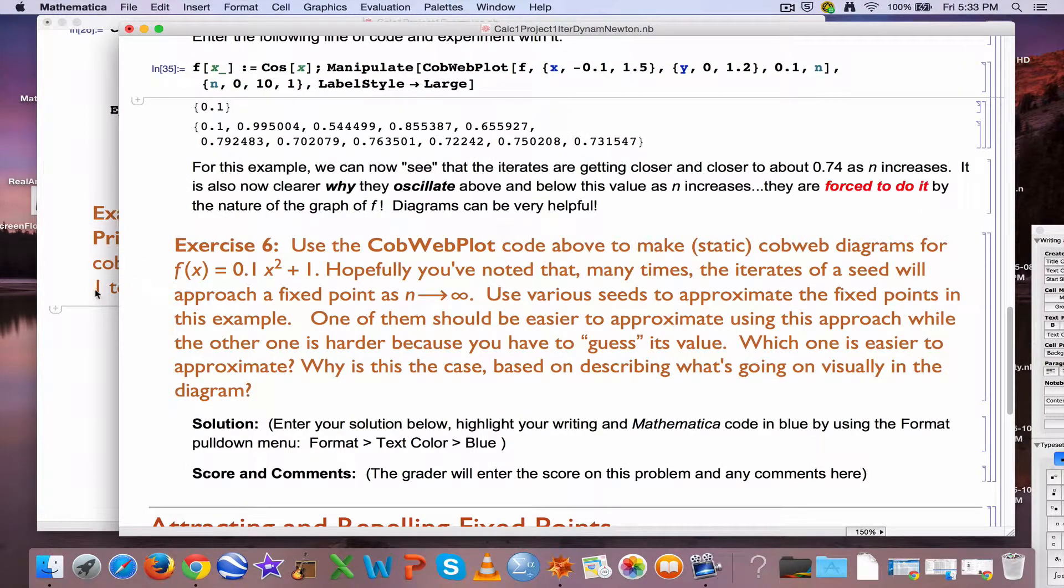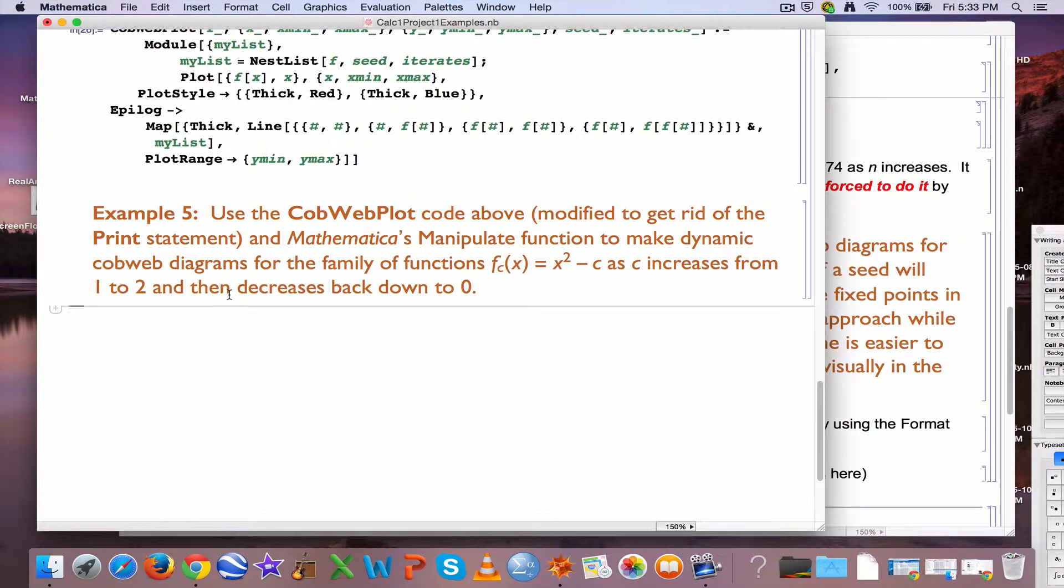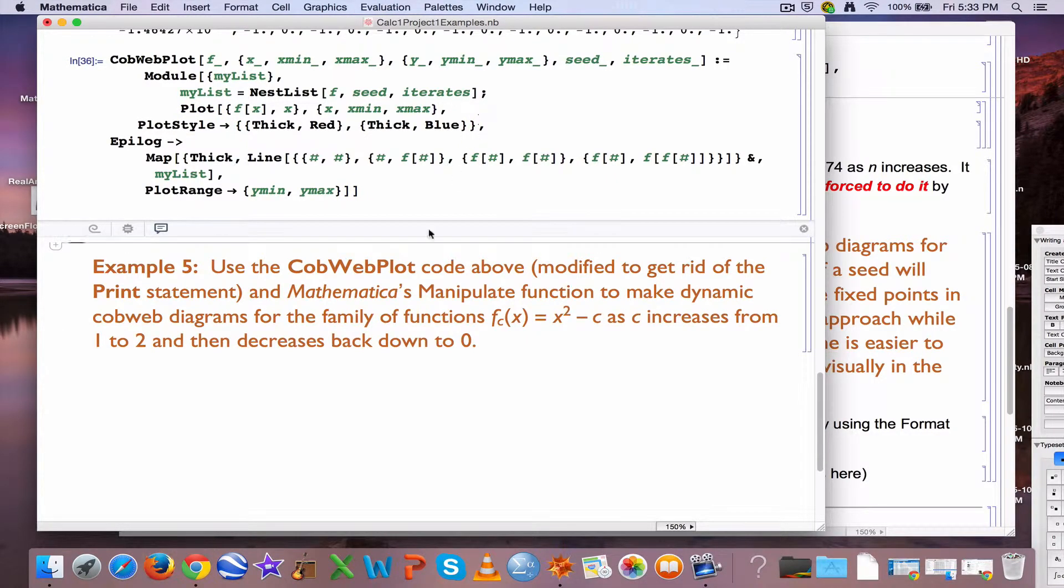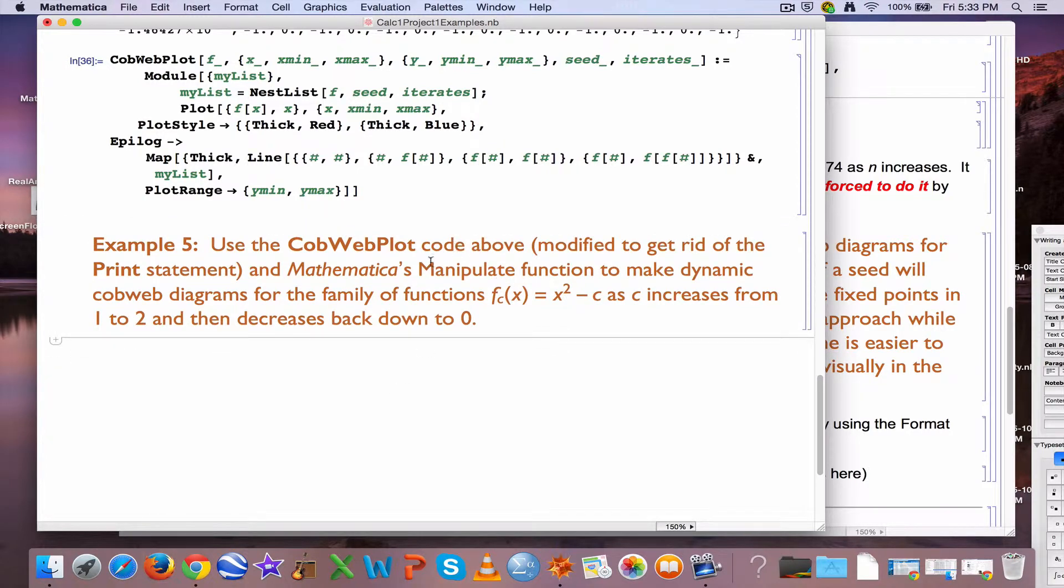I will now do a new example in this particular file here, which is not the same as the project file. I'm going to re-enter the cobweb plot code here, and it excludes a printing command, because the printing command kind of messes things up. So I'm going to re-enter this cobweb plot code, and now I'm going to use it to animate.